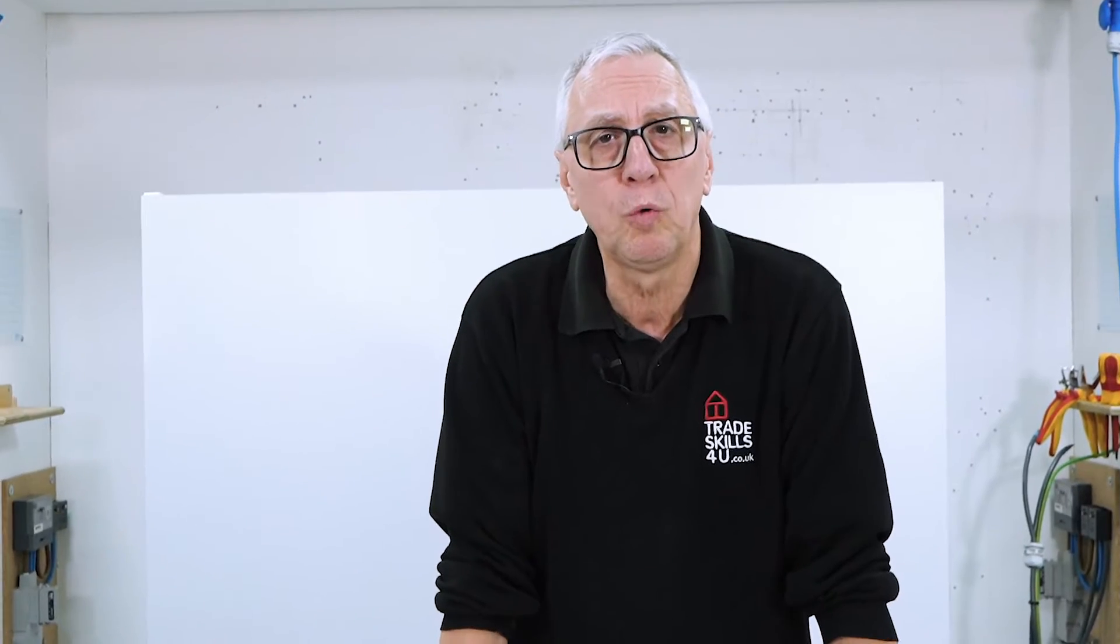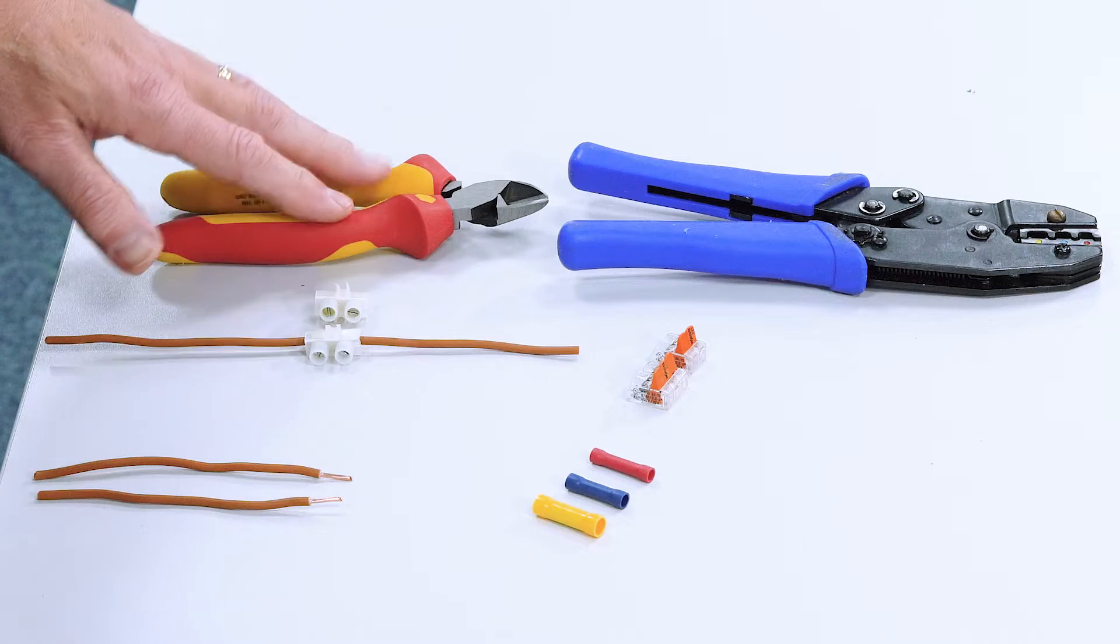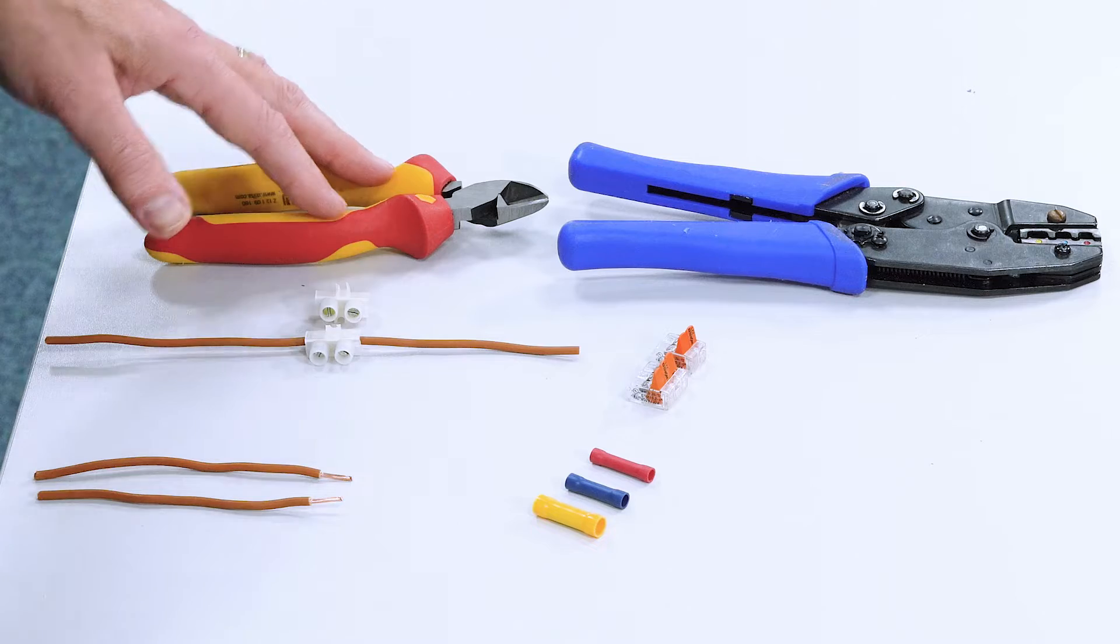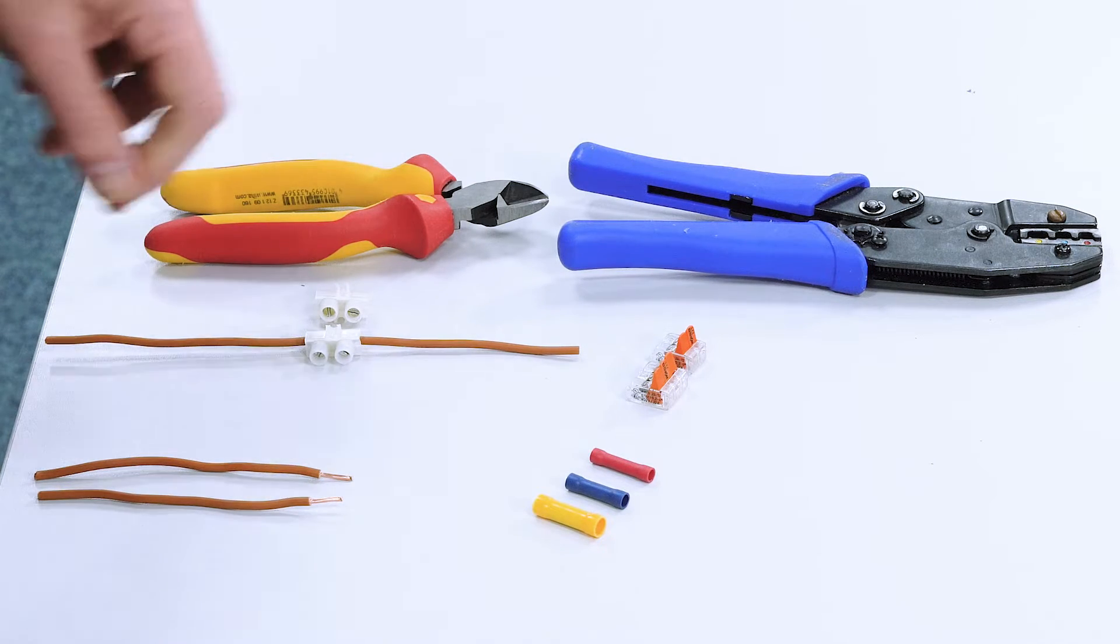Right, let's take a look at what we need to do this job. So I've got my crimping tool here, I've got some side cutters for cutting my conductors. And let's have a look at the three different ways of extending a cable.